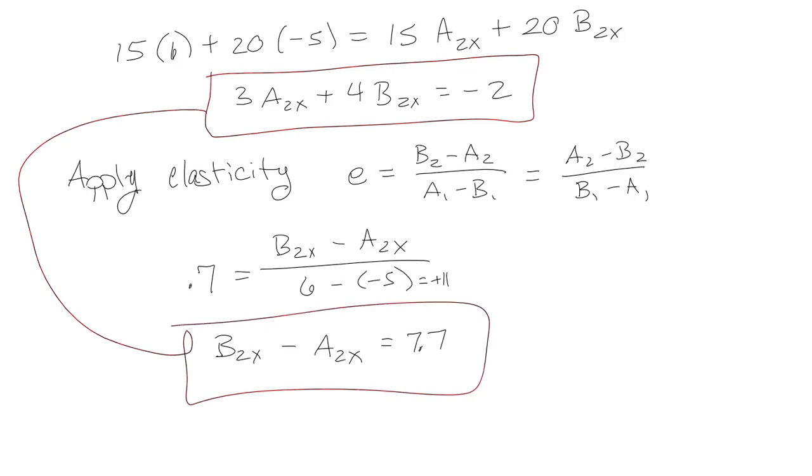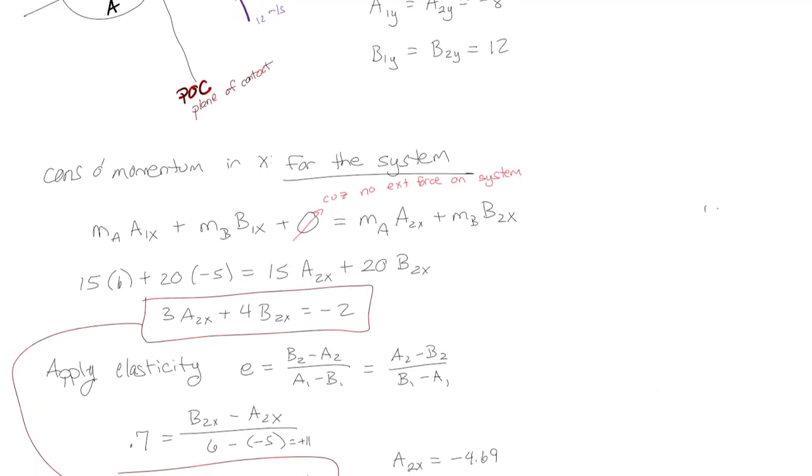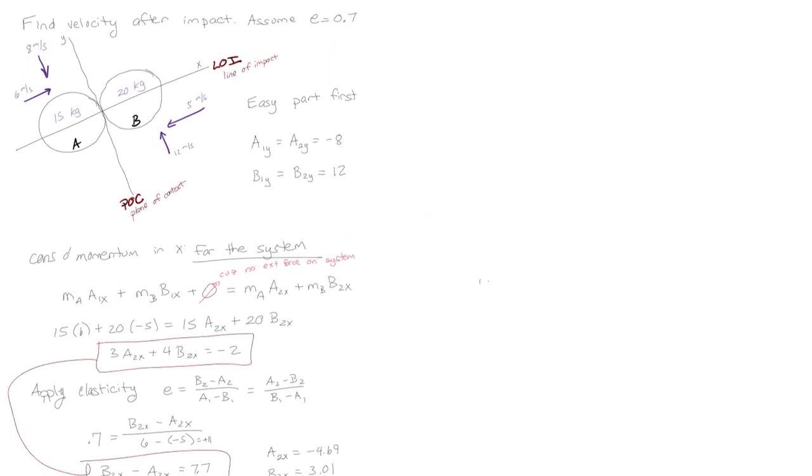So actually from here, I can just take these two here and solve them. And I'm trying to do more of the physics and less of the math. So let's just assume if you're solving a problem like this, you can solve two equations and two unknowns. So you'll end up with A2X is equal to negative 4.69, and that B2X is equal to 3.01. Now, if they're asking for the components of velocity, then you're actually done because you've got the X and Y components at each. If they're asking for the magnitude, or if these are in fact labeled as X and Y axes, you can be like, okay, so the velocity of A2 would be given by negative 4.69 in the X direction and negative 8 in the Y direction.